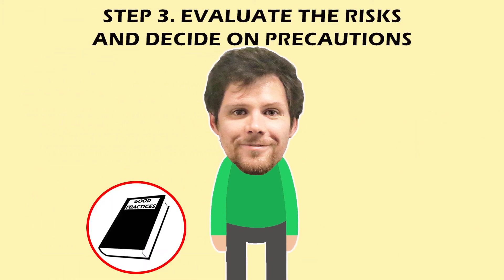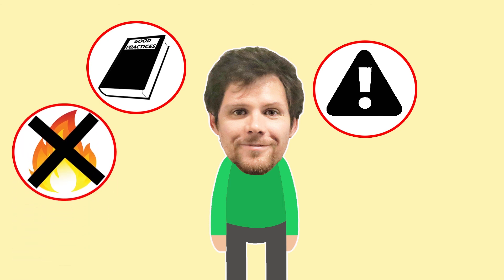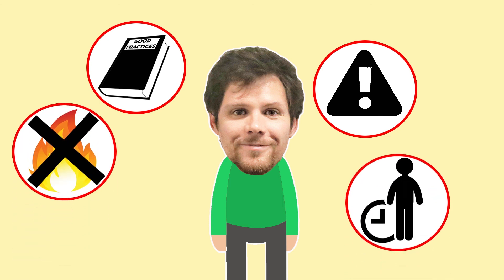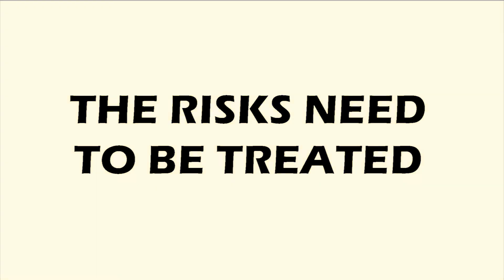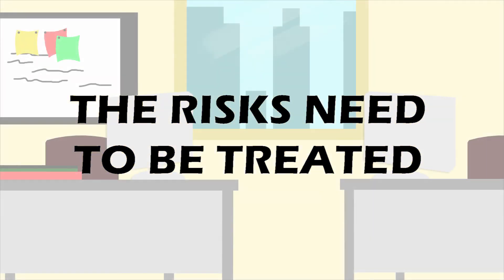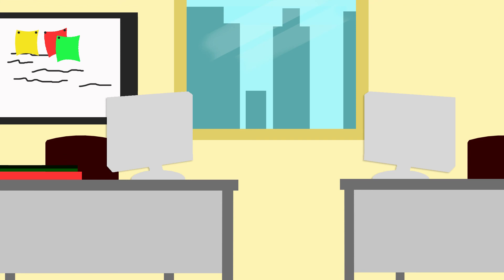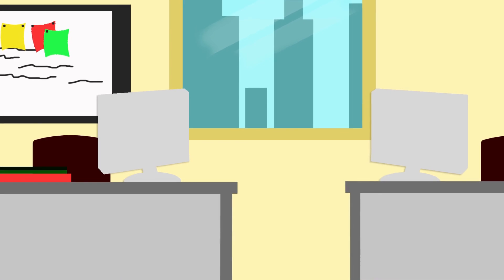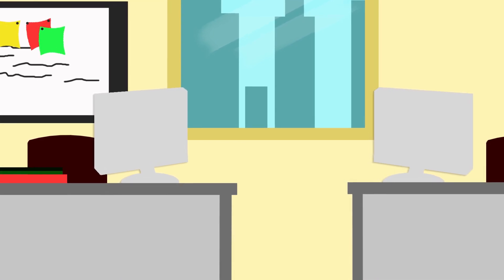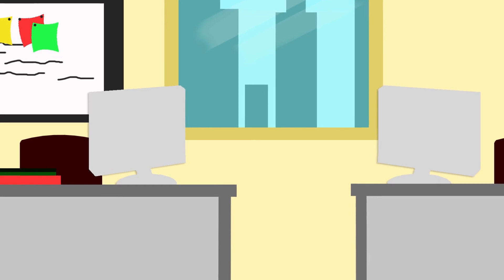Compare what you are doing with good practices and see how to bring yourself up to standard. Try a less risky option. Prevent access to the hazard. Organise work to reduce exposure to the hazard. Provide personal protective equipment and welfare facilities. Risk treatment takes further action to ensure the risk is minimised to a level of tolerance, including improving current controls that have been ineffective. Risk management is a cyclic process and needs to be continuously reviewed to ensure success.